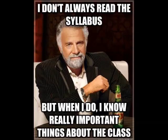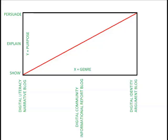First of all, you'll want to make sure to read the syllabus carefully. If you have a question about the course, chances are it's going to be covered in the syllabus. The major assignments we'll be doing in this course are listed here along with the main purpose of those assignments. The first assignment is called a digital literacy narrative blog, and the main purpose is to show an event in your life where you struggled with a particular digital technology.